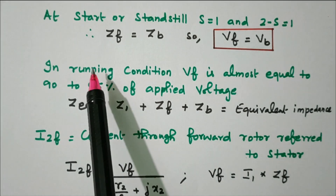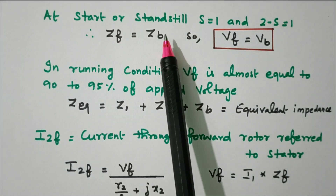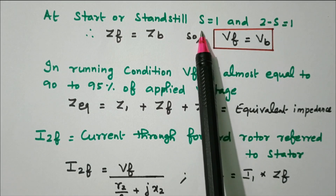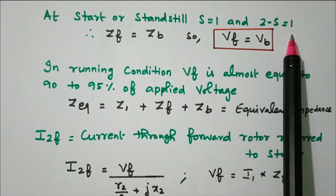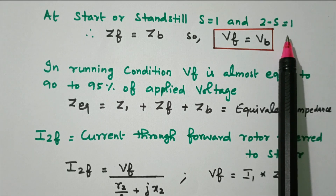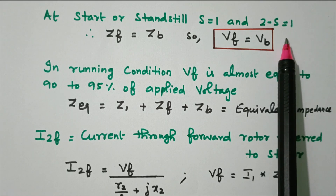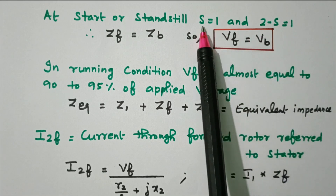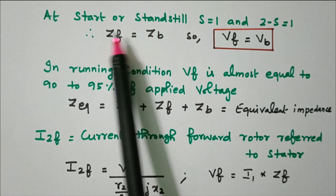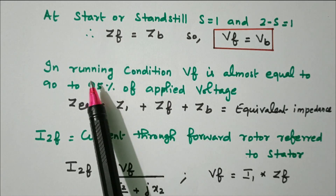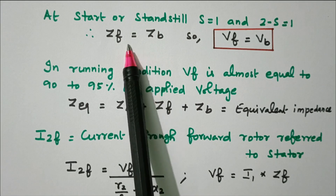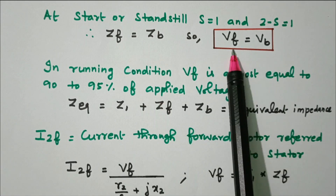At start or standstill, s equals 1 and therefore 2 minus s also equals 1. There is no speed; the rotor has not yet rotated. At standstill, zf equals zb, meaning the forward and backward impedances are equal, and therefore vf equals vb — forward voltage equals backward voltage.